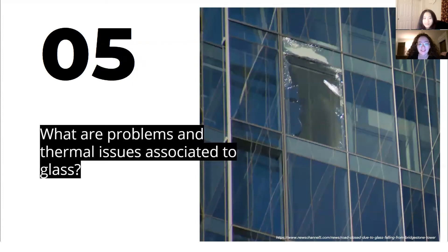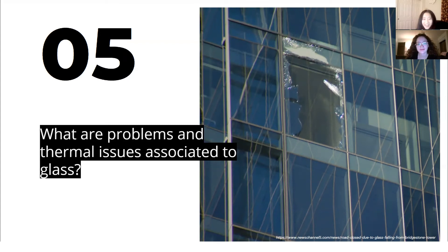Next question: what are the problems and thermal issues associated with glass? There are a lot of problems associated with glass, but here are a couple. Glass is really heavy — it's pretty much the same weight per cubic foot as concrete, which is not very easy to carry. Second, glass has a really high embodied energy and allows radiant heat gain, which is really bad for the thermal comfort of a building. Lastly, it's not a really good insulator — you have excessive heat loss.